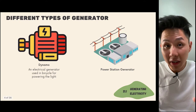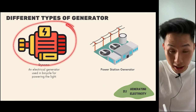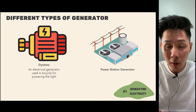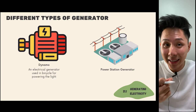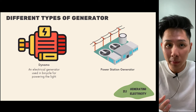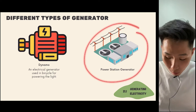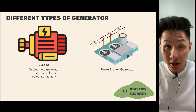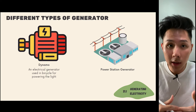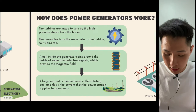There are different types of generators. A dynamo is sometimes installed in a bicycle — when your tire moves, it generates electricity that lights up your light. There's also the power station generator, which can be a nuclear fuel generator or a hydroelectric dam generator.